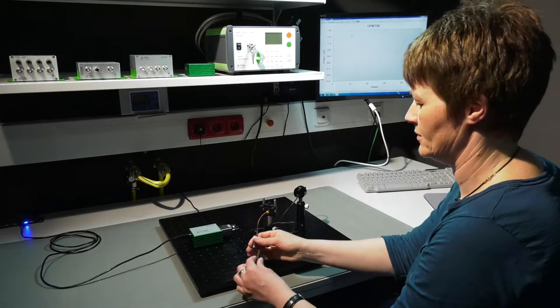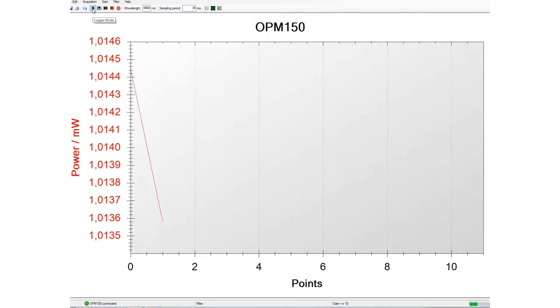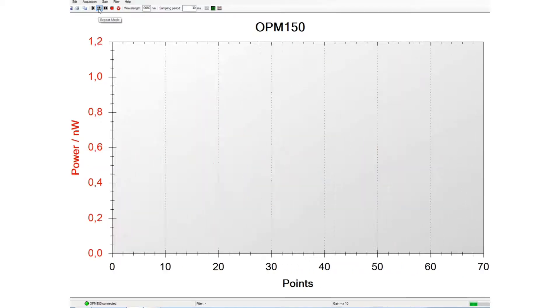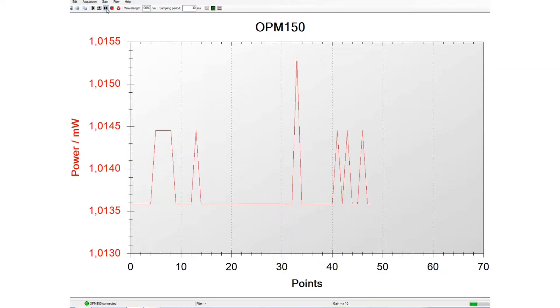The OPM 150 software has four display modes: logging, scope, scroll, and digital display.